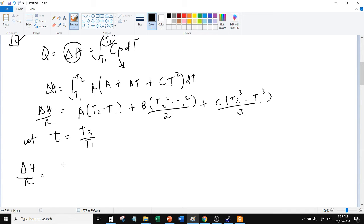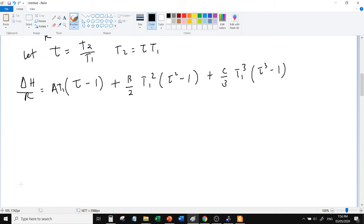So A times - take out T1, and since T2 equals tau times T1, taking out T1 gives us: tau minus 1. Same for the others: B over 2, take out T1 squared, tau squared minus 1. C over 3, take out T1 cubed, tau cubed minus 1. Okay, then substitute the values.